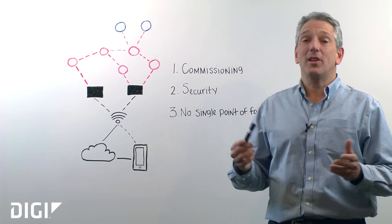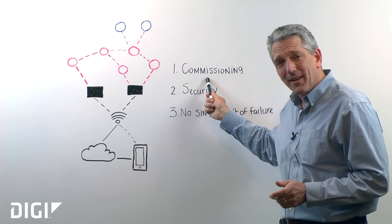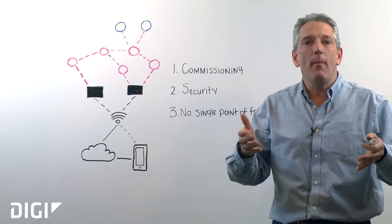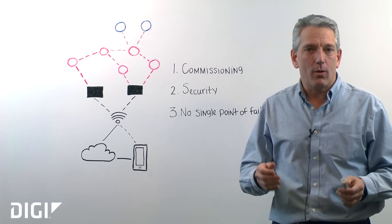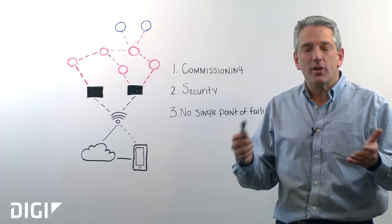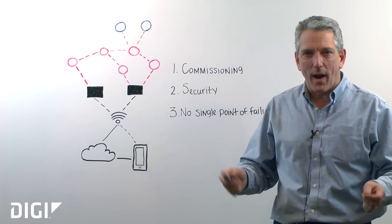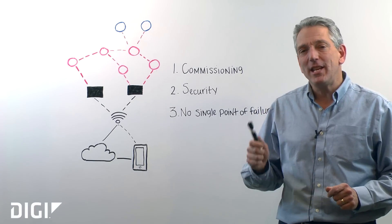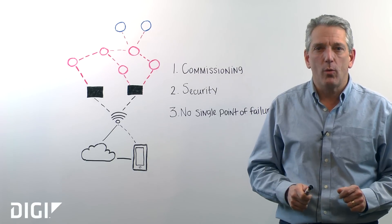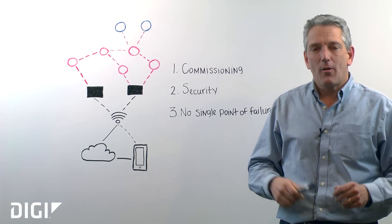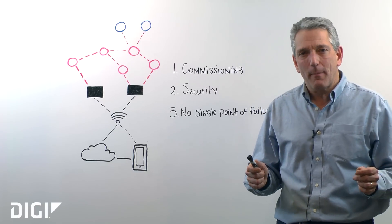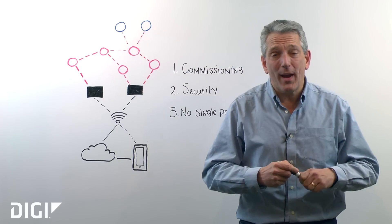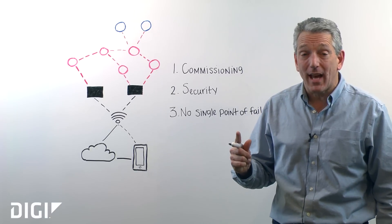The first key benefit is commissioning. What is commissioning? Commissioning is how you join a network — how you become a good member of that network that's able to actually use and talk to all other members with all those rights and privileges. Thread is great at commissioning because it uses that one tool that we all know: a smartphone. Rather than pressing a lot of different buttons or dealing with blinky lights, all you have to do with Thread is have a smartphone and your Thread network.